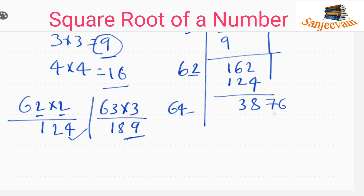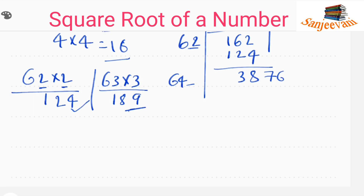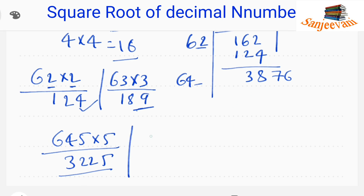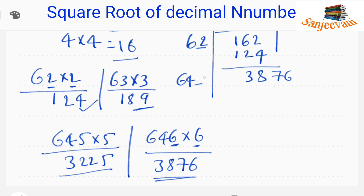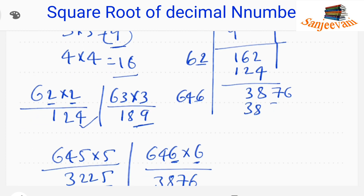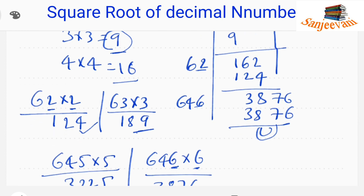We need to place a digit alongside 64 and multiply it by itself. Trying 645×5=3225, which is less than 3876. Trying 646×6=3876 — that is exactly equal. So we choose 6 and write it here. 3876 minus 3876 equals 0. The square root of 106276 is 326.